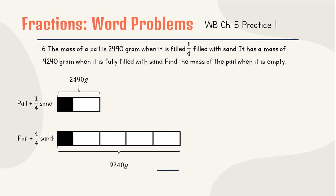Can you spot the difference? So from 2,490 to 9,240, we subtract it: 9,240 minus 2,490 equals 6,750 grams for 3 units, or 3/4. Now we know that 3 units equals 6,750, so 1 unit will be 2,250 grams.